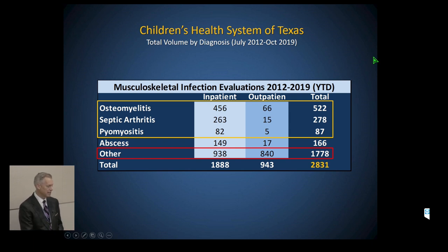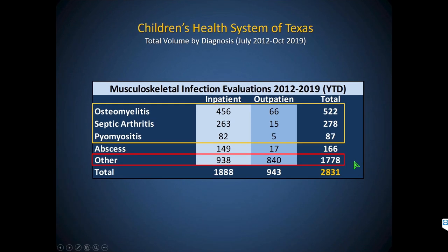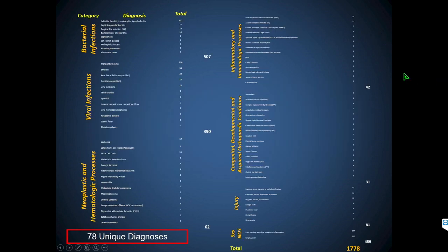In the past seven years we've done over 2,800 evaluations for children with confirmed deep infections, but the interesting part is that 1,778 cases — two-thirds of what I see — are suspected to have musculoskeletal infection but play out to be other things. This includes other bacterial infections not of the musculoskeletal system, viral processes, neoplastic and hematologic disorders, inflammatory and immunologic processes, congenital or developmental orthopedic conditions, fractures, and otherwise not-specified symptoms that run a self-limited course.